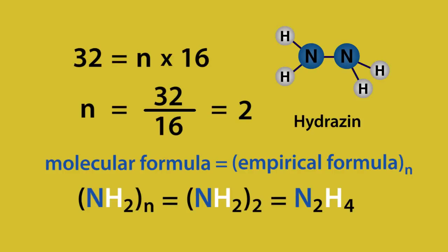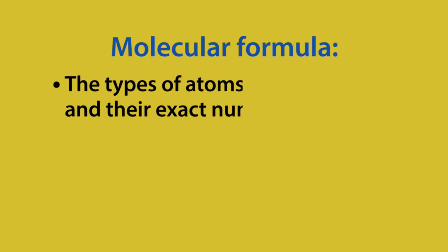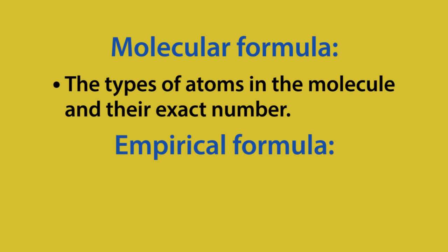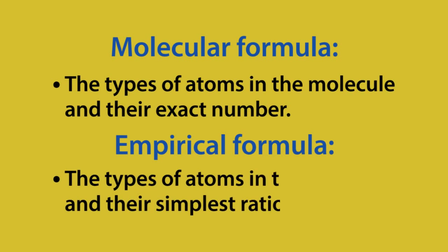To recap: the molecular formula tells us the types of atoms in a molecule and their exact number, while the empirical formula gives the simplest ratio of each type of atom.